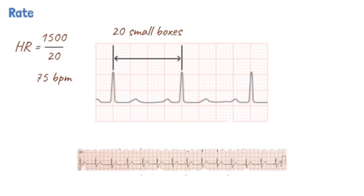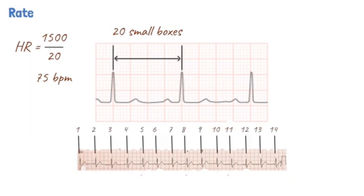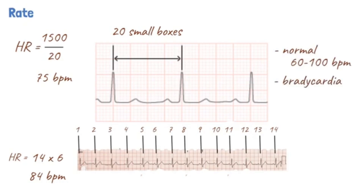For example, in the ECG strip shown, there are 14 QRS complexes in the rhythm strip, giving 84 beats per minute. In an average adult, the normal heart rate is taken to be 60 to 100 beats per minute. Bradycardia occurs when the heart rate is less than 60 beats per minute, while tachycardia is when the heart rate is greater than 100 beats per minute.